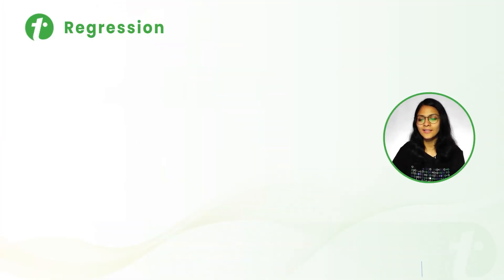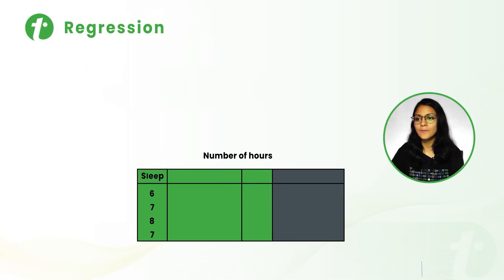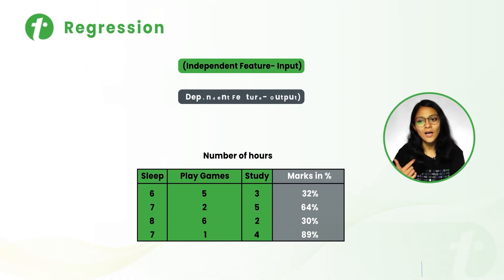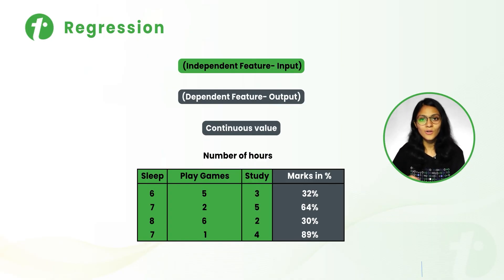Now let's talk about a regression type problem. Again, the number of hours for sleep, playing games, and study are the independent features, and the marks percentage obtained is the output variable — the dependent feature. We can observe that we are getting the exact percentage marks of the students, meaning we are getting a continuous value in the output variable. So this is the type of regression.